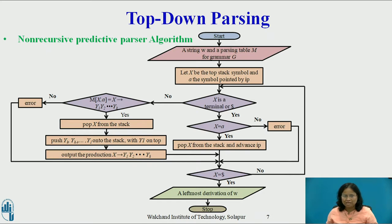Until X equals $, that is, the stack is empty. Output: if W is in L(G), that is, the language of grammar G, output a leftmost derivation of W; otherwise, output an error indication.